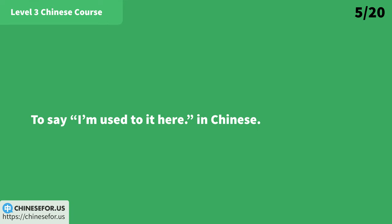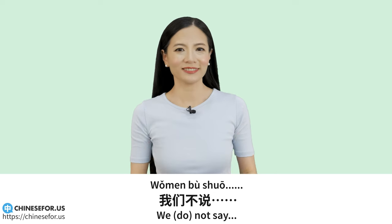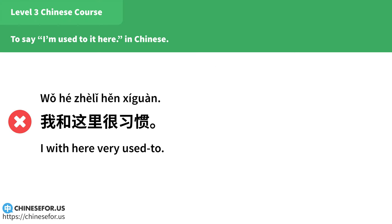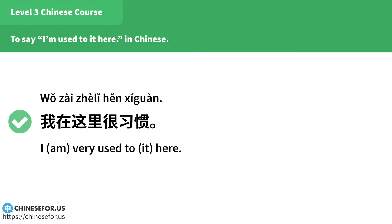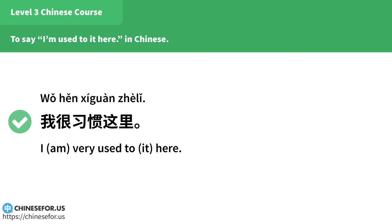To say "I'm used to it here" in Chinese: 我们不说「我和这里很习惯」，我们说「我在这里很习惯」。也可以说「我很习惯」或「我很习惯这里」。